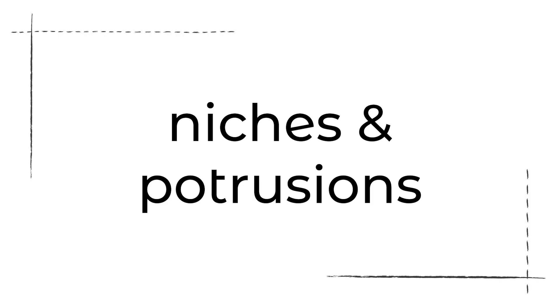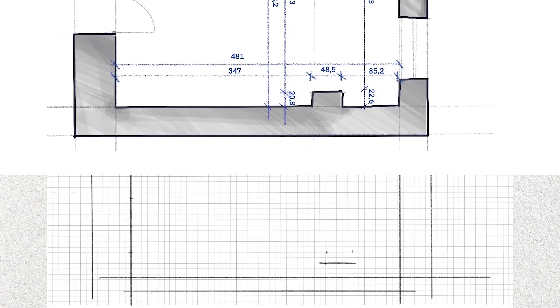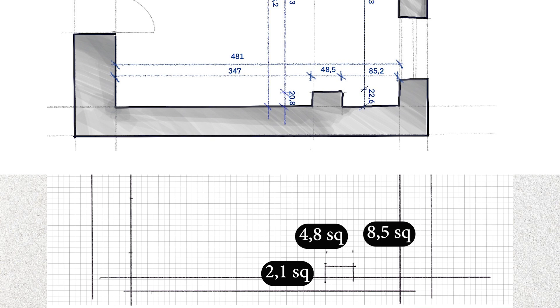Now that we have the overall contour, it's time to carve out the niches and protrusions. The first protrusion is 24.7cm — that's 2.5 squares — and 135.4cm long, which makes it 13.5 squares. The second protrusion is 20.8cm, so a bit over 2 squares. It is 85cm, or 8.5 squares, away from the outdoor wall, and the protrusion itself is 48cm, or 4.8 squares wide. I hope by now you've got the big idea of how to draw this in the scale of 1 to 20.